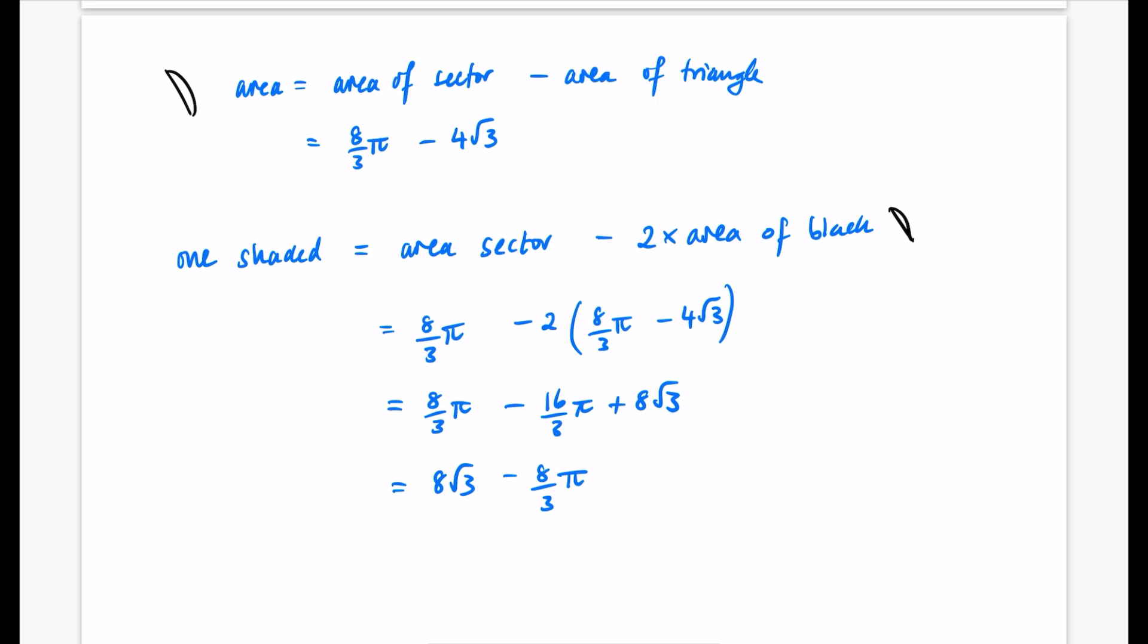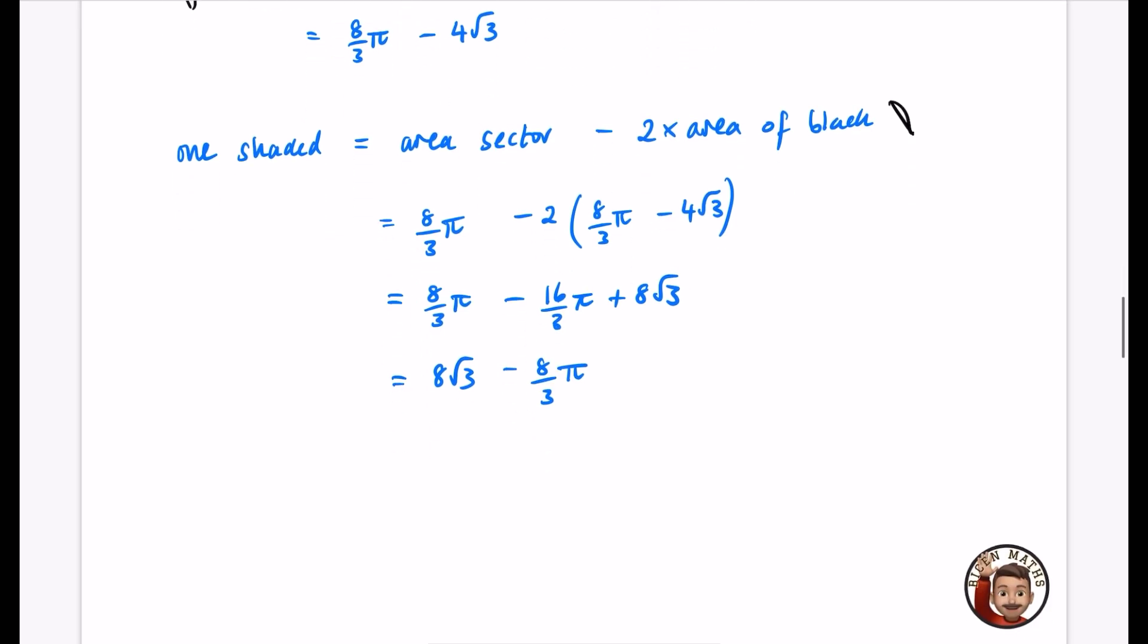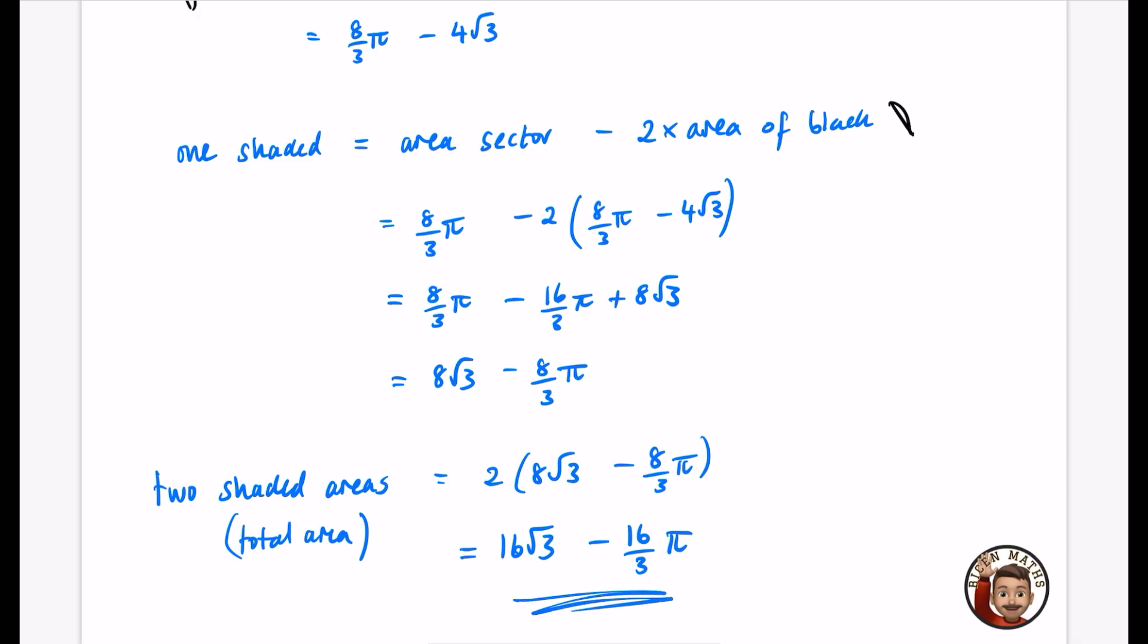So if I want two shaded areas, which is basically the total area, all I need to do is double that answer. So it's going to be two lots of 8 root 3 minus 8 over 3 pi, which gives me 16 root 3. And two lots of 8 over 3 is 16 over 3 pi for this question. Incredibly challenging question.